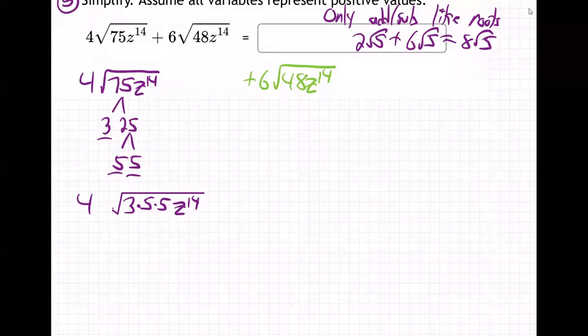What does that leave? That leaves this 4 square root of 3, 5, 5, and the z to the 14th. Now what happens here? Two 5s in, one 5 out, right? Two for one deal. That's going to become 20 on the outside. What about z to the 14th? What comes out? Z to the 7, right? You just cut the powers in half. And what's left in is just the square root of 3.